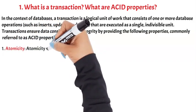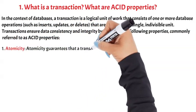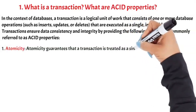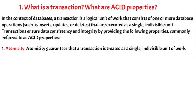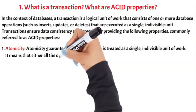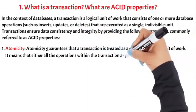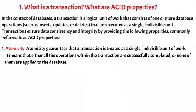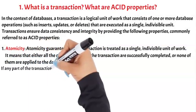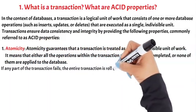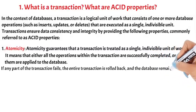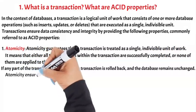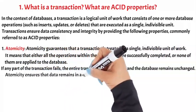Atomicity. Atomicity guarantees that a transaction is treated as a single, indivisible unit of work. It means that either all the operations within the transaction are successfully completed or none of them are applied to the database. If any part of the transaction fails, the entire transaction is rolled back and the database remains unchanged. Atomicity ensures that data remains in a consistent state.